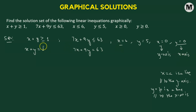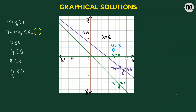We use a graphing calculator to plot x plus y equals to 1, 7x plus 9y equals to 63, x equals to 6, y equals to 5, x equals to 0, and y equals to 0. The green line represents x plus y equals to 1. The indigo line represents 7x plus 9y equals to 63. The black line is x equals to 6, x equals to 0 passes through the y-axis, the blue line is y equals to 5, and the green line through the x-axis represents y equals to 0.